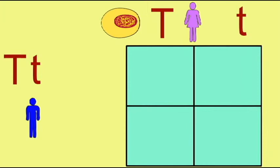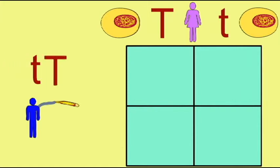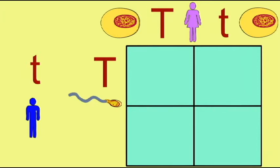Half the gametes would possess dominant alleles, the other half would possess recessive alleles. A quarter of the offspring would result when a dominant allele-bearing sperm fuses with a dominant allele-bearing ova, and the offspring would be homozygous dominant.